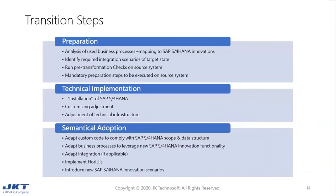The main transition steps are preparation, technical implementation, and semantical adoption. In preparation, we do analysis of all used business processes and S4HANA innovations, identify required integration scenarios of the target state, and run pre-transformation checks on the source system. In technical implementation, we do the actual installation of S4HANA software and customizing adjustment of the technical infrastructure. Finally, in semantical adoption, we adapt custom code to comply with S4HANA scope and data structures, adapt business processes to leverage new S4HANA innovation functionality, implement Fiori, and introduce new S4HANA innovation scenarios.